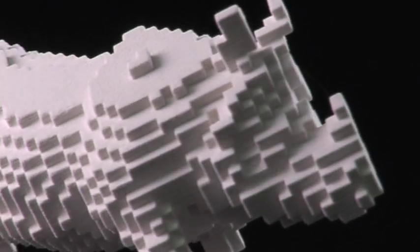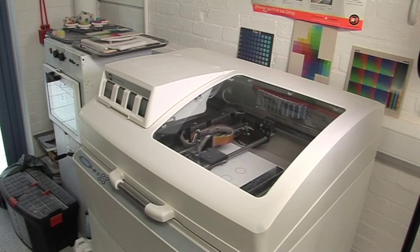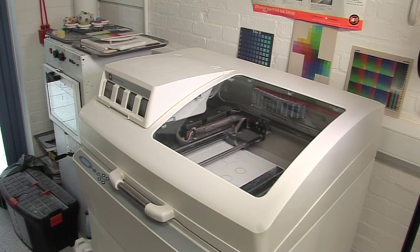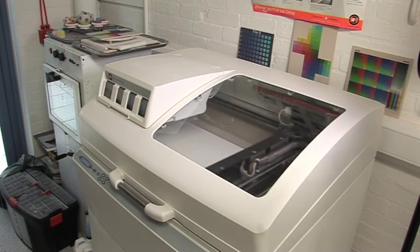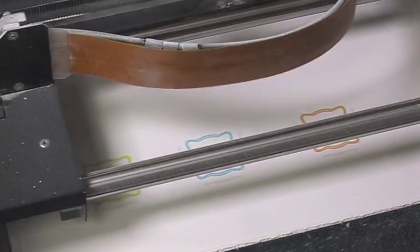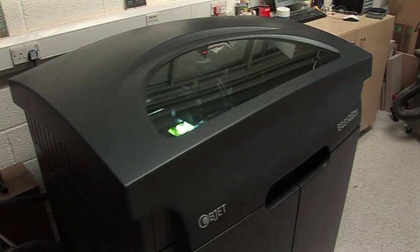We have a kind of range of technology. At a simpler level we have the Z-Corp rapid prototyping machines, which just lay layers of powder down and a glue, a binder that binds them together. We have two of those. We have one that prints in colour, and one that is just a straight, in essence, black and white, even though it only prints in white plaster. And we have the object machine, which is a photopolymer deposition machine.